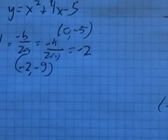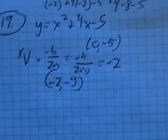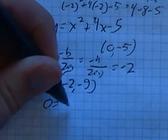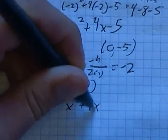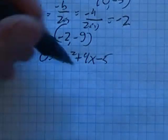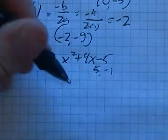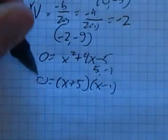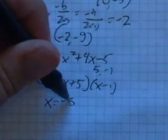So all I need now is my x-intercepts and my graphing will be complete. In order to find that, I'm going to let y be 0. I could factor that. 5 and negative 1. So it looks like x is negative 5 or 1.